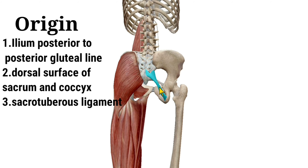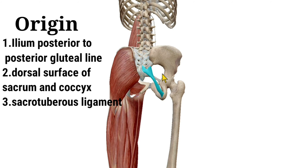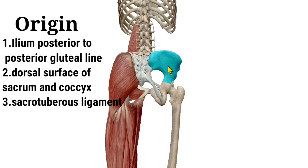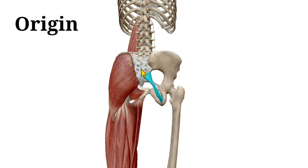Another origin is from the dorsal surface of the sacrum and coccyx bone. So the origin is from the ileum posterior to the posterior gluteal line, from the sacrotuberous ligament, and from the dorsal part of the sacrum and coccyx.